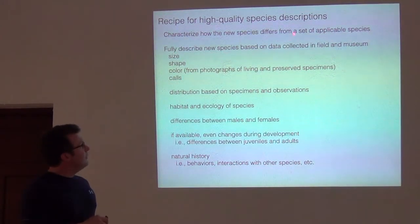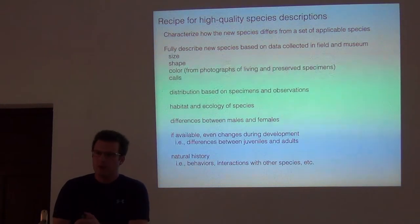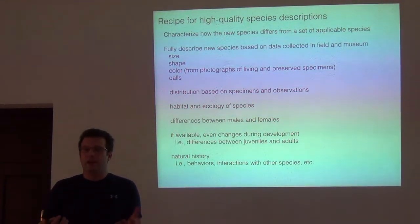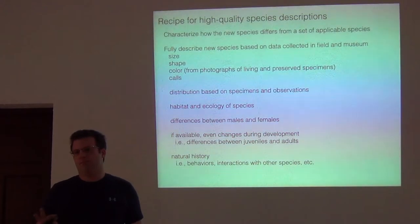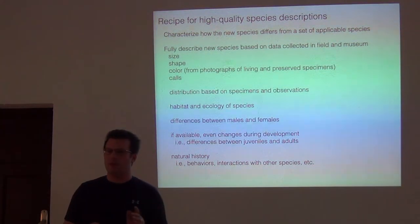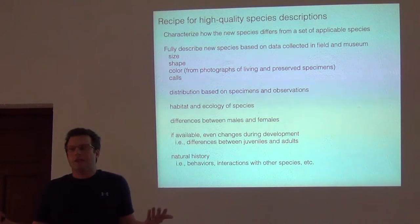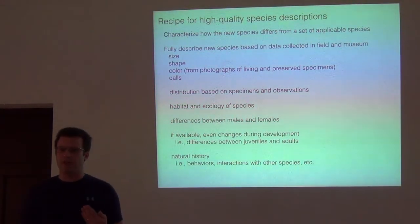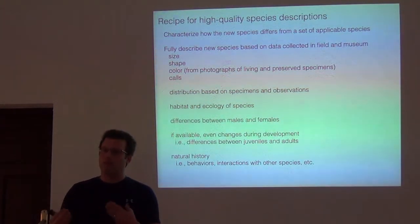A lot of these pieces of information you're going to get from the field. To fully describe a new species, there's the diagnosis — where you say how it's different from other things — but also the description, where you actually convey in words what it looks like. It's really not sufficient to say it differs from all these other species by having spines and here's a picture. That won't pass review. You can't just rely on a picture and hope everyone else can see the same features. You really need to have a full description. Rafe and I will sometimes talk about features on the inside of the mouth that are hard to show in a photograph.